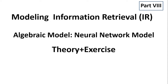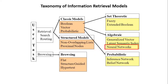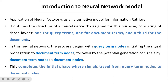Welcome to this channel. The topic is modeling information retrieval. In this video, the neural network model is explained with an example. The neural network model comes under the algebraic model, which is an extension of the classical vector model. This is an introduction to the neural network model and its application as an alternative model for information retrieval.